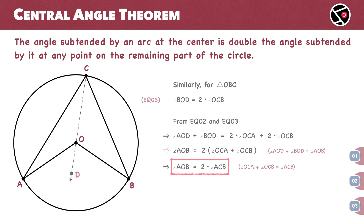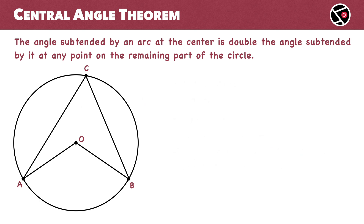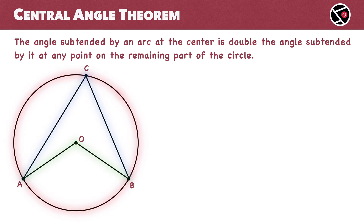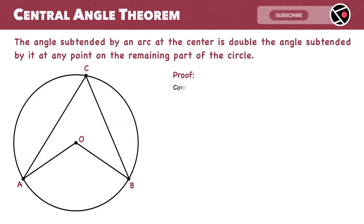Moving to the second approach, we again start with a circle with center O. Arc AB subtends angle AOB at center O and angle ACB at point C on the circumference. For the proof, we connect point C to point O.